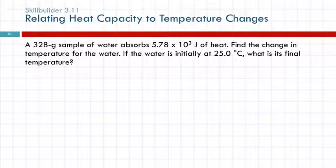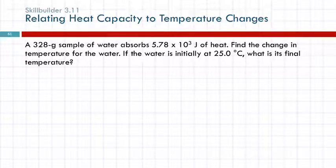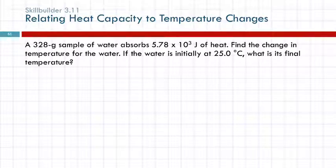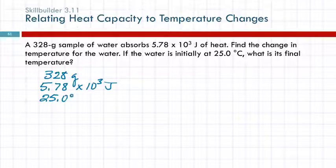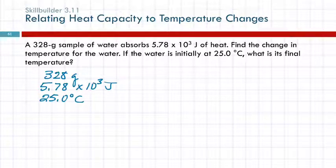Here's another example. A 328 gram sample of water absorbs 5.78 times 10 to the third joules of heat. Find the change in temperature for the water. If the water is initially at 25 degrees Celsius, what is its final temperature? So we read through it and write down our numbers: 328 grams, 5.78 times 10 to the third joules, and 25.0 degrees Celsius.